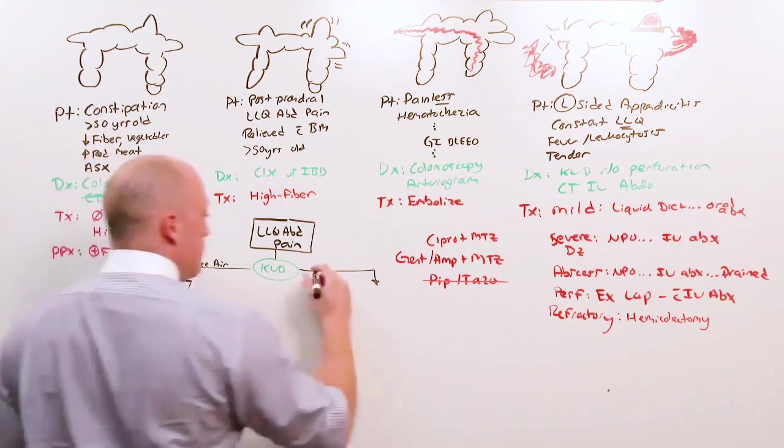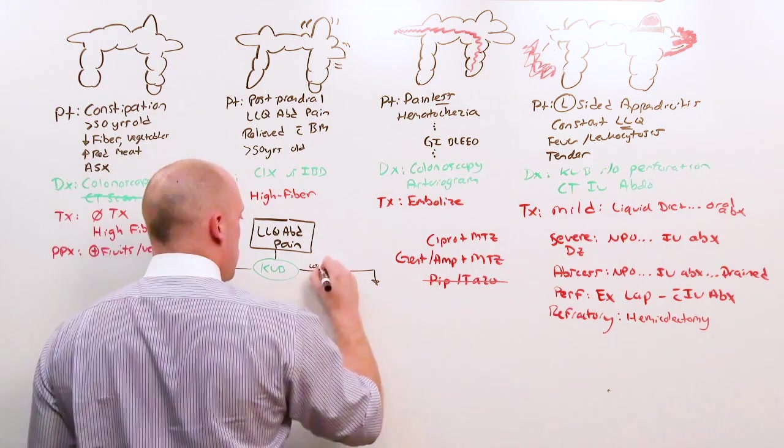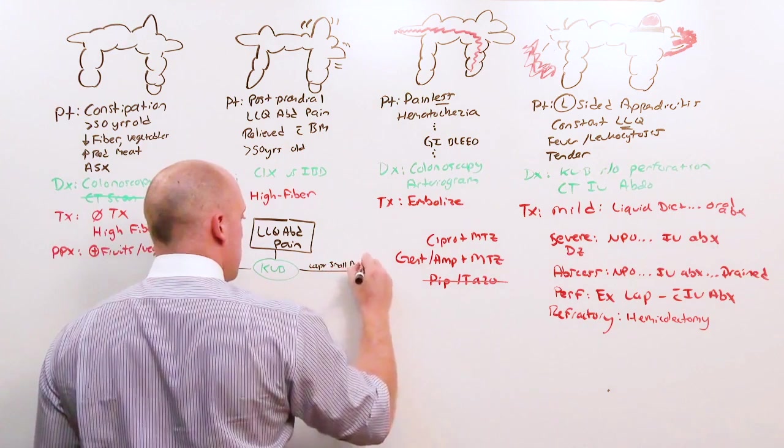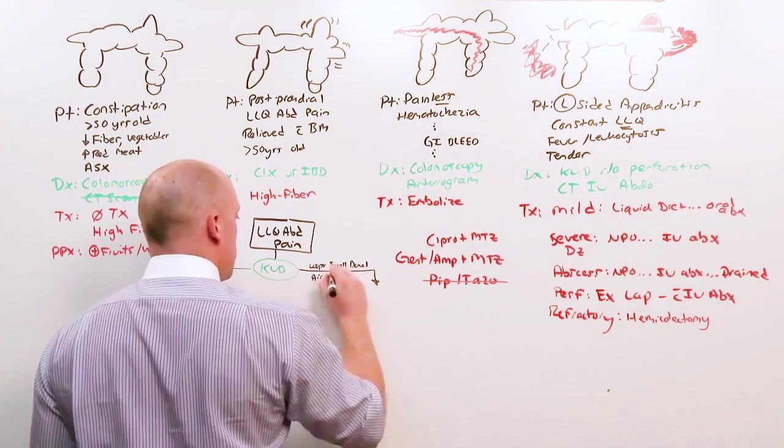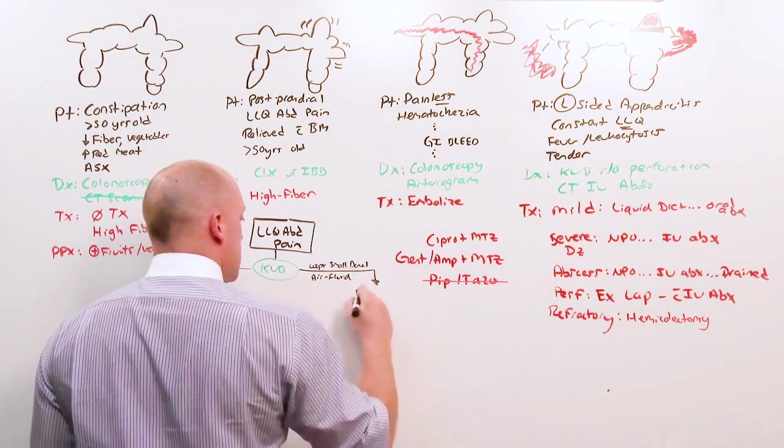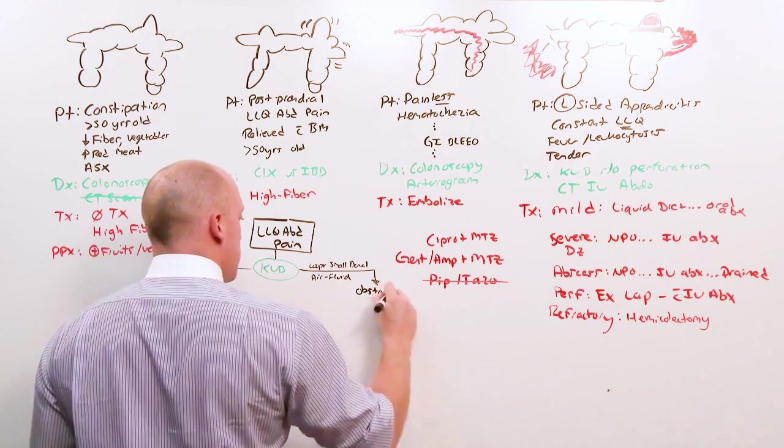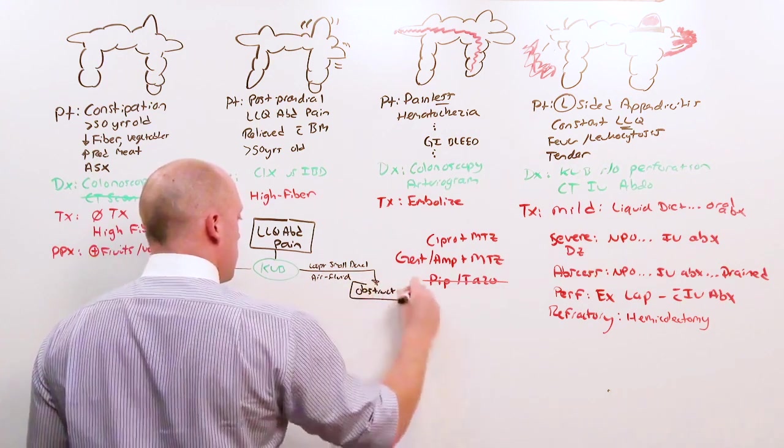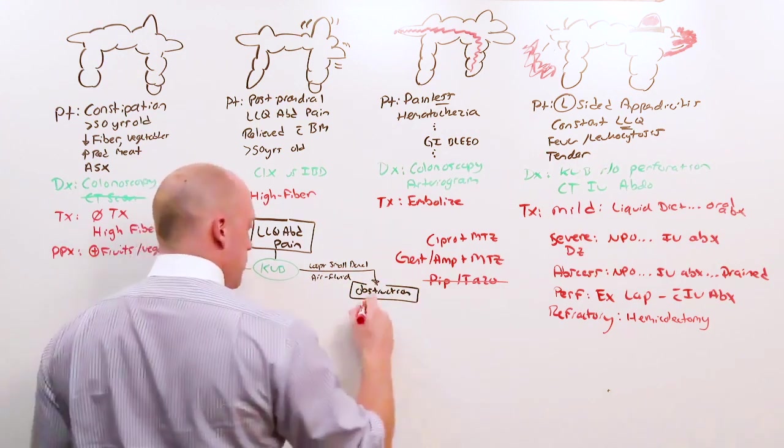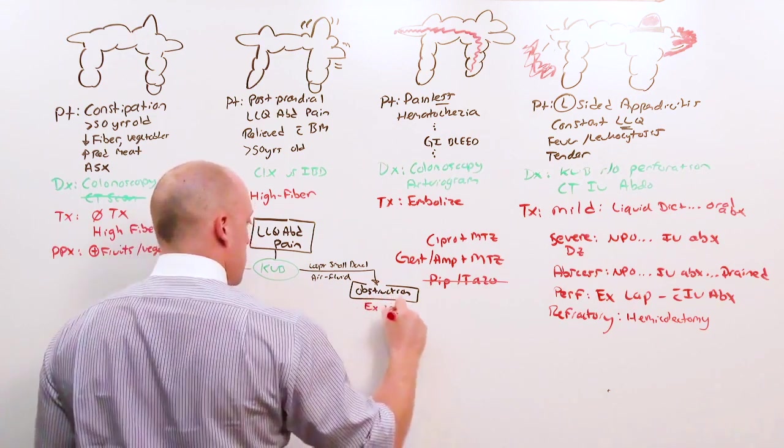If instead you see loops of small bowel and air fluid levels, that's an obstruction. That goes to surgery but doesn't necessarily need antibiotics.